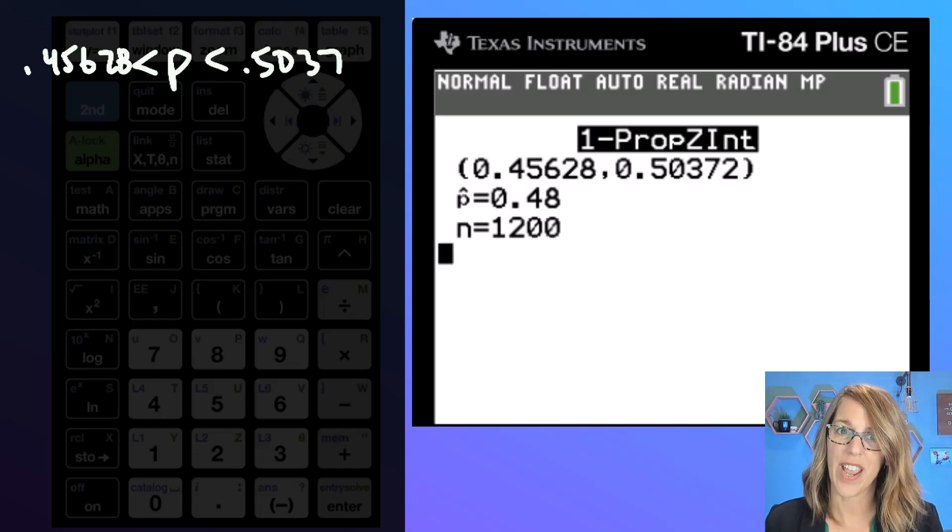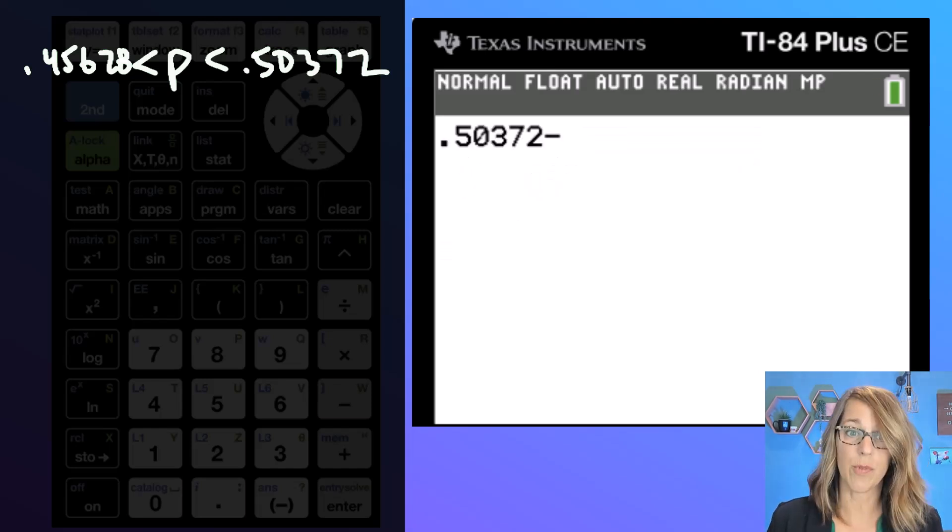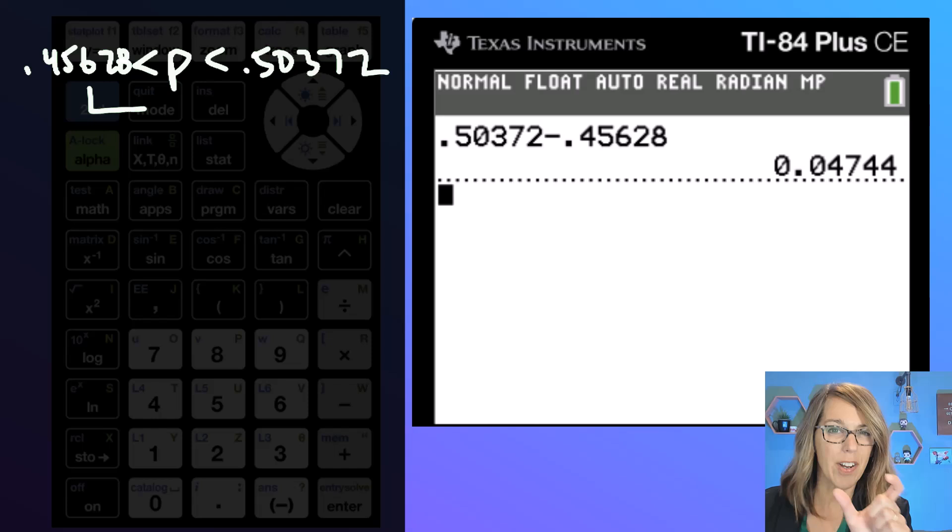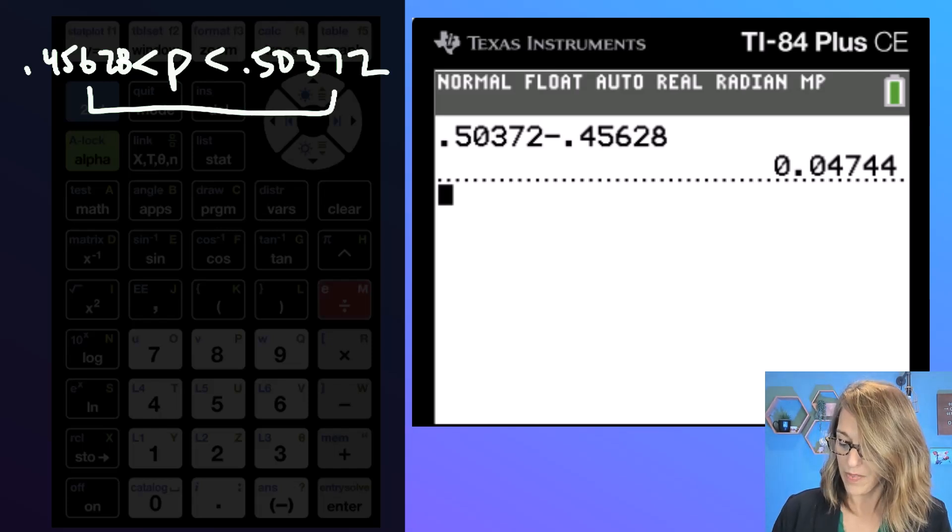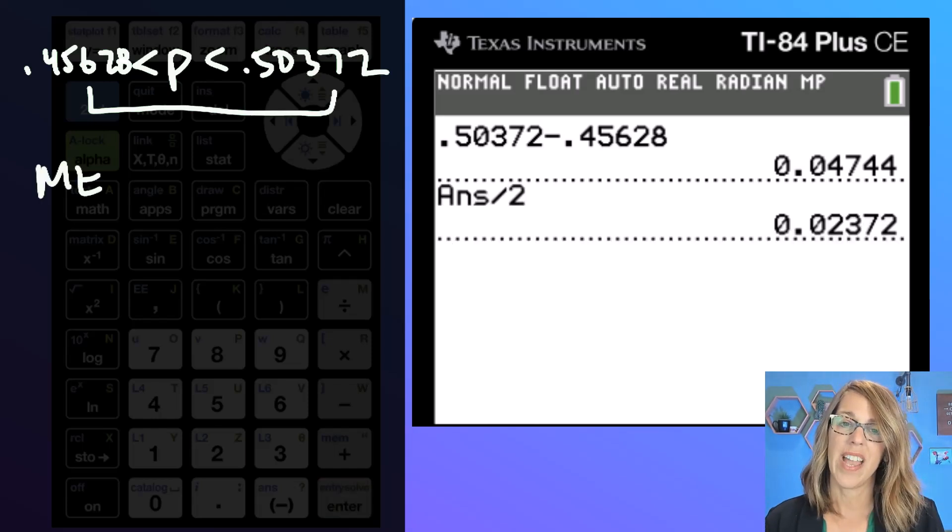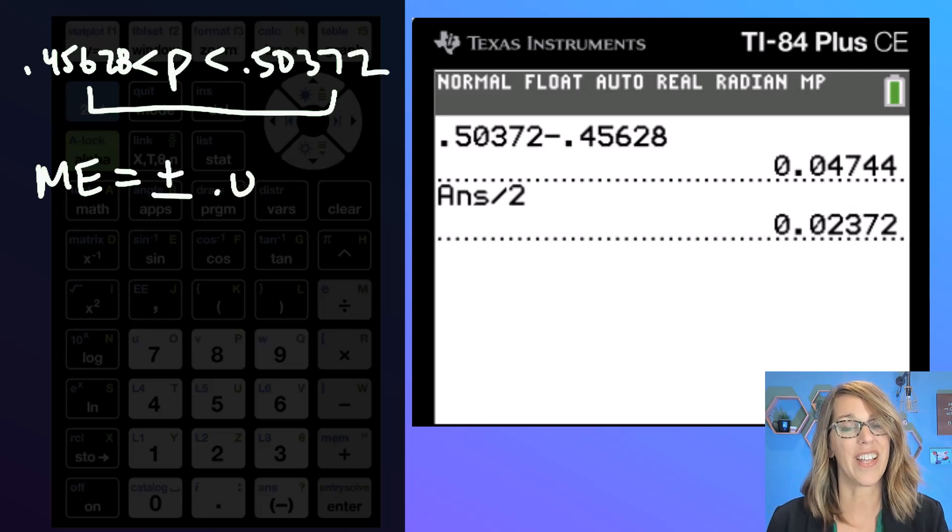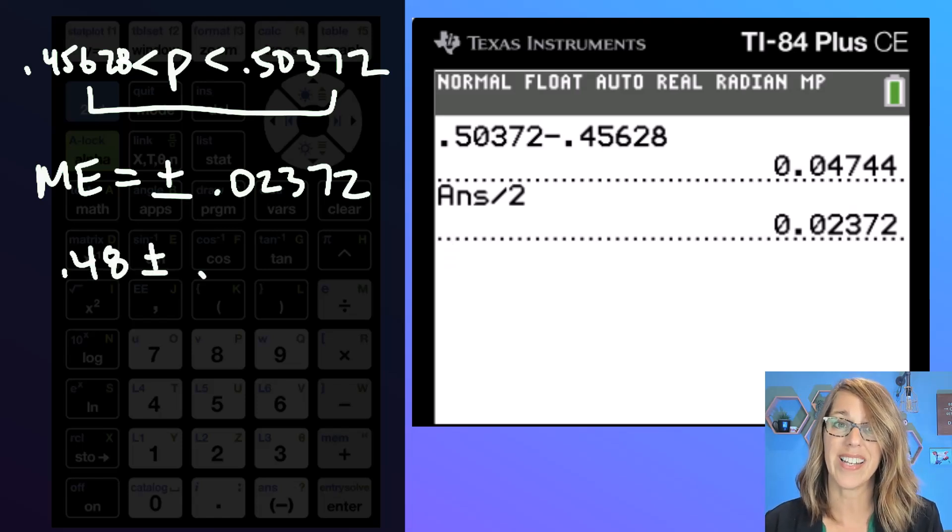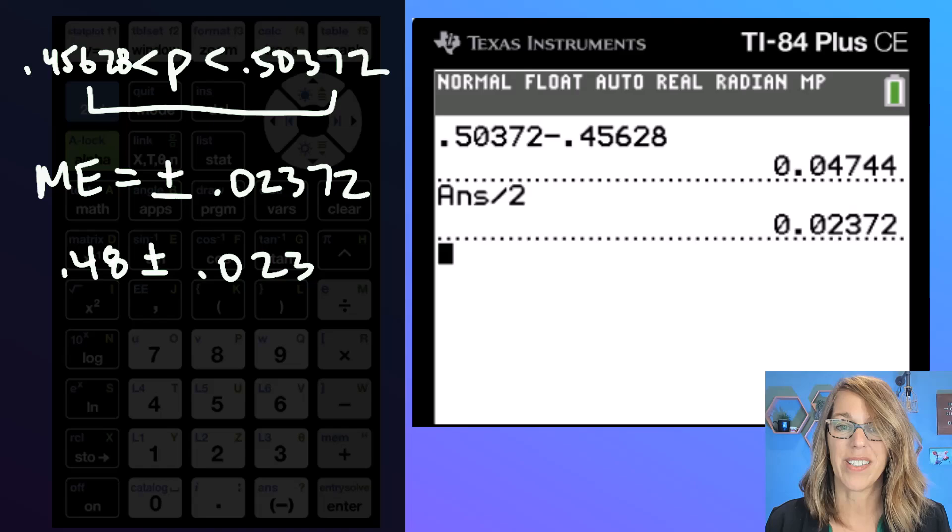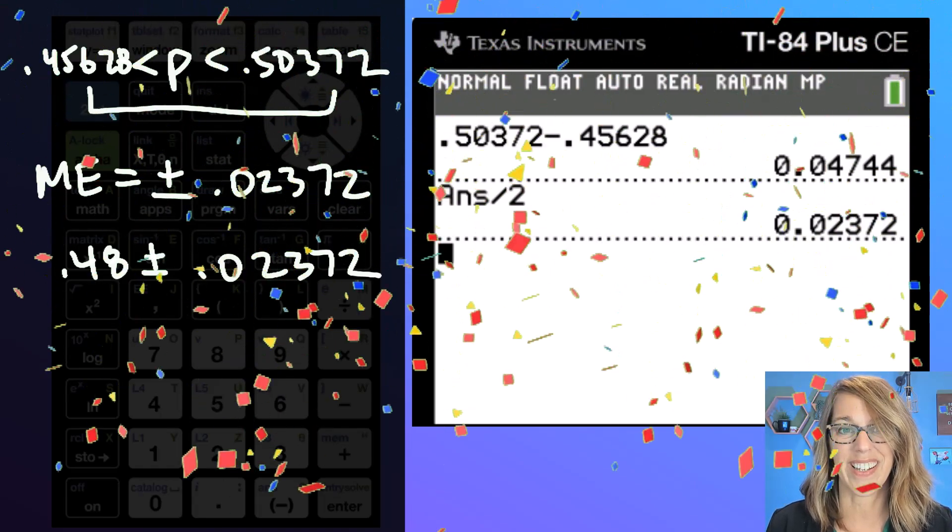To find that margin of error let's take that upper number of 0.50372 and subtract that lower number of 0.45628. This gives me the entire length of the interval but we want half so I'm going to divide that by two and I've got my margin of error so I can express this confidence interval as my sample proportion which is my estimate so 0.48 plus or minus 0.02372.